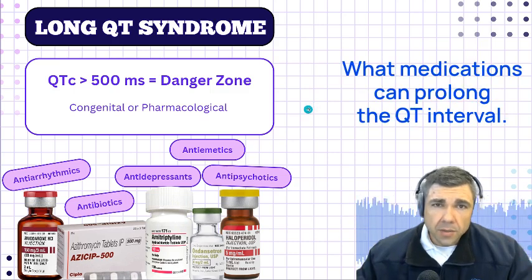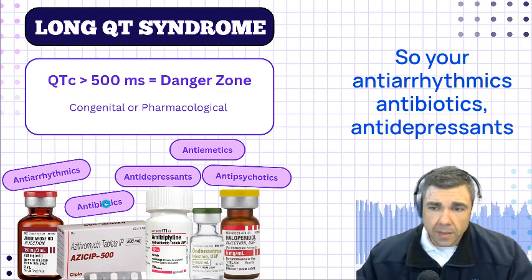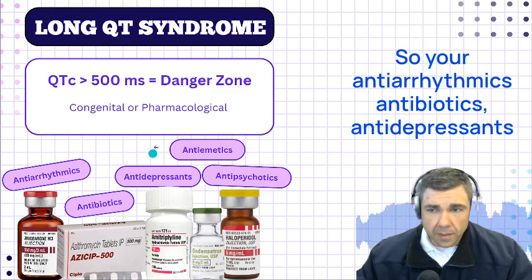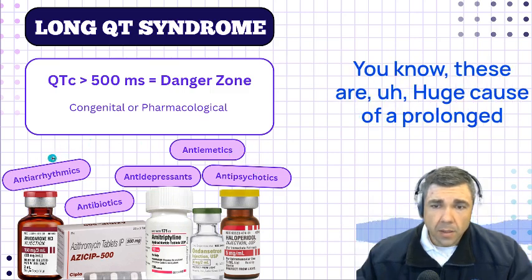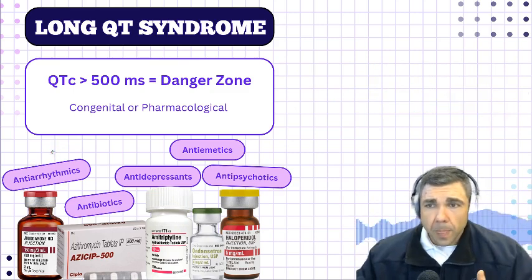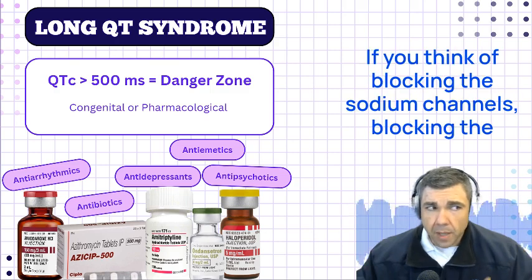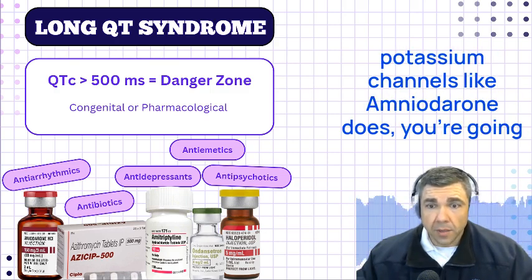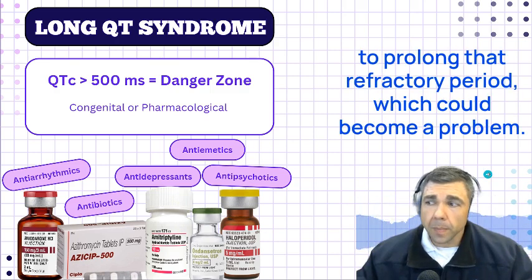What medications can prolong the QT interval? Think of the 'antis': antiarrhythmics, antibiotics, antidepressants, antiemetics, and antipsychotics. Antiarrhythmics are a huge cause of a prolonged QT interval because they block the ion channels. Blocking the sodium channels, blocking the potassium channels — like amiodarone does — prolongs that refractory period, which can become a problem.